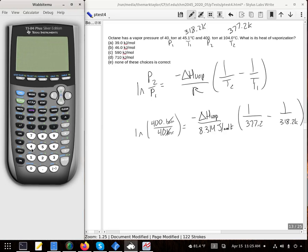So I'm going to start with 400 divided by 40, and then take the natural log of that. And now I will multiply by 8.314 and divide by my parenthesis: 377.2 inverted minus 318.2 inverted. Close parenthesis. Equals.